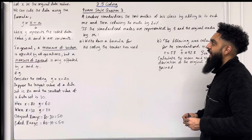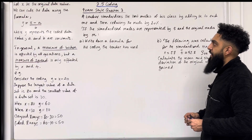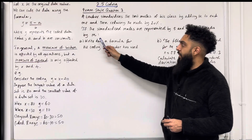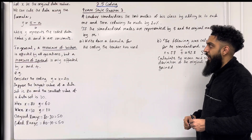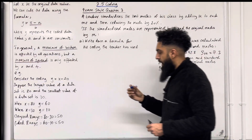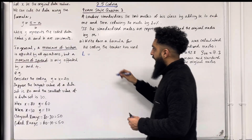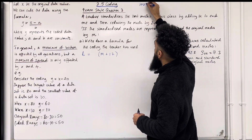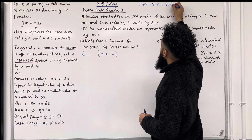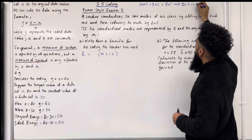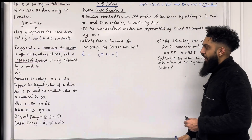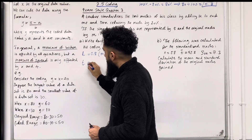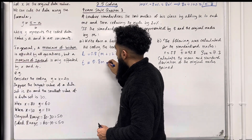Here is exam style question 3. A teacher standardizes test marks by adding 12 to each one and then reducing the mark by 20%. If the standardized marks are represented by T and the original marks by M, part A asks us to write down the coding formula. We take the original mark M, add 12, then reduce by 20%, meaning we multiply by 80% which is 0.8. So T equals 0.8 times (M plus 12), which expands to T equals 0.8M plus 9.6.